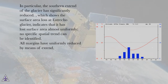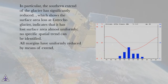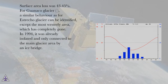The surface area loss at Estrecho Glacier indicates that it has lost surface area almost uniformly — no specific spatial trend can be identified. All margins have uniformly reduced in extent. Surface area loss was 43.45%.